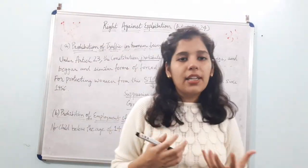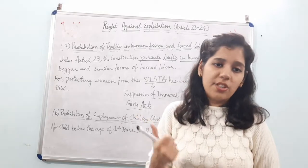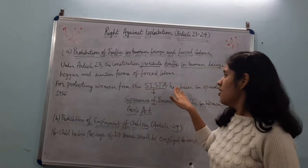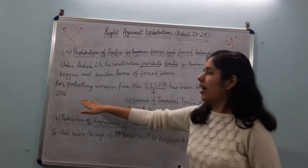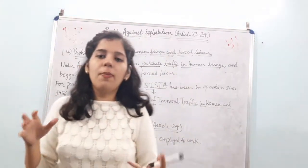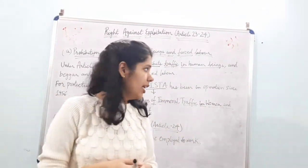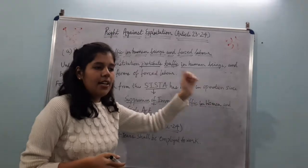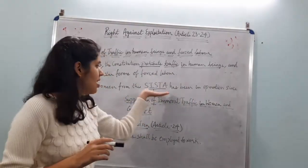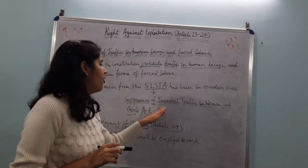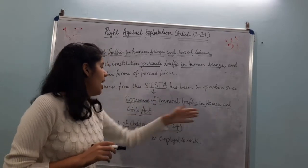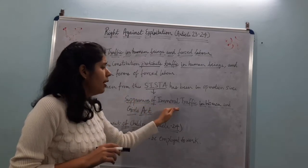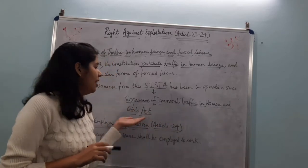To protect women from human trafficking, there is an organization called SITA, which has been in operation since 1956. SITA stands for Suppression of Immoral Traffic in Women and Girls Act. This organization protects women from human trafficking — the buying and selling of women — and this has been prohibited under Article 23.